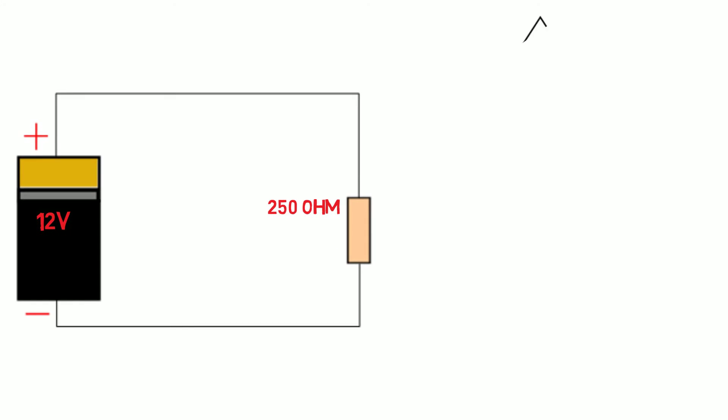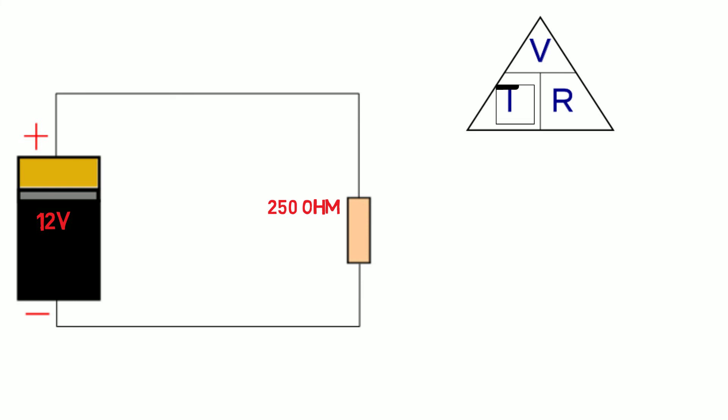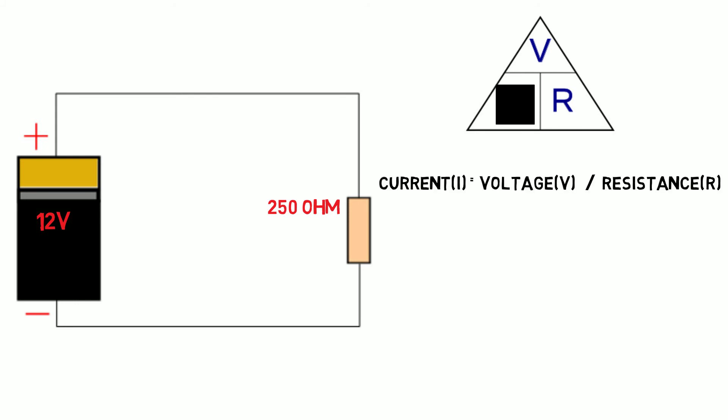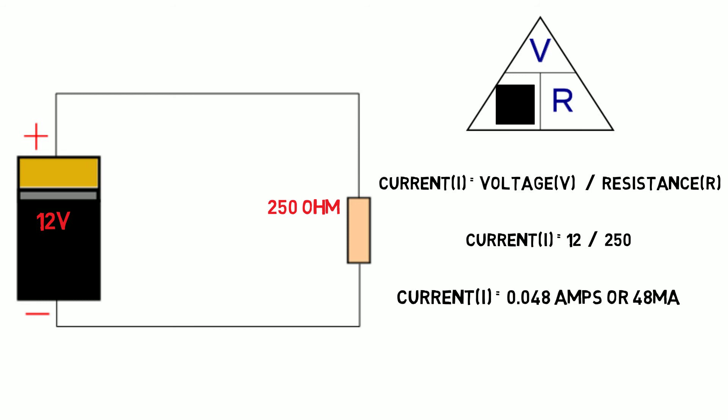So we want to know what the current is flowing through the circuit without using a meter. Let's use Ohm's law to calculate this. We look at our triangle and know we want to work out the current. We cover the I and are left with voltage divided by resistance. So we take 12 volts and divide by 250 ohms, which gives us a value of 0.048 amps, which can also be written as 48 milliamps — all this without using a meter.